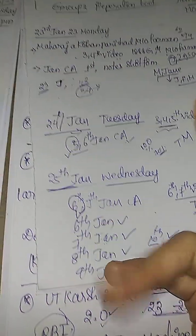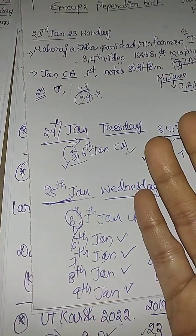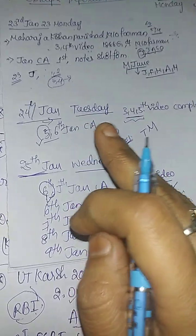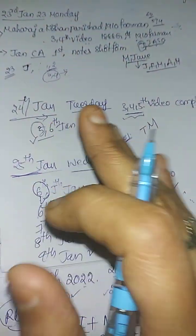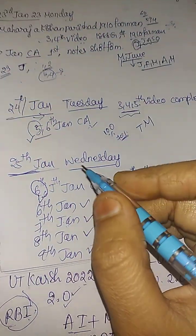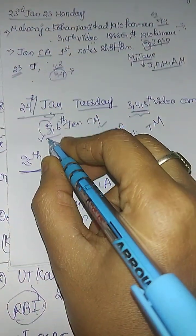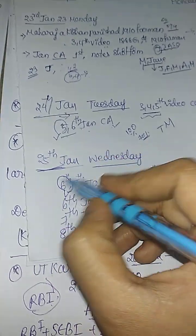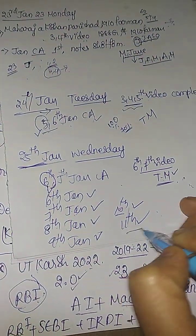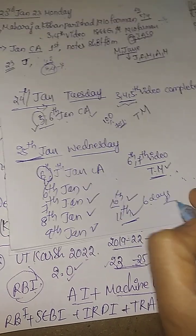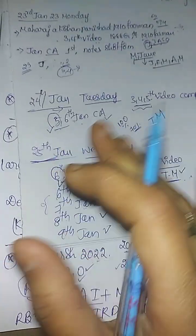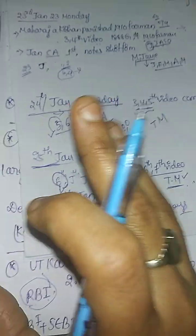I will complete this day. This is the time of day — you will complete this day. When you come to 24 hours, you can complete it. I will check the 6th, 7th, 8th, 9th, 10th and 11th. I will check those 6 days. I will check the 2 days and the 1 hour and I will check the notes.